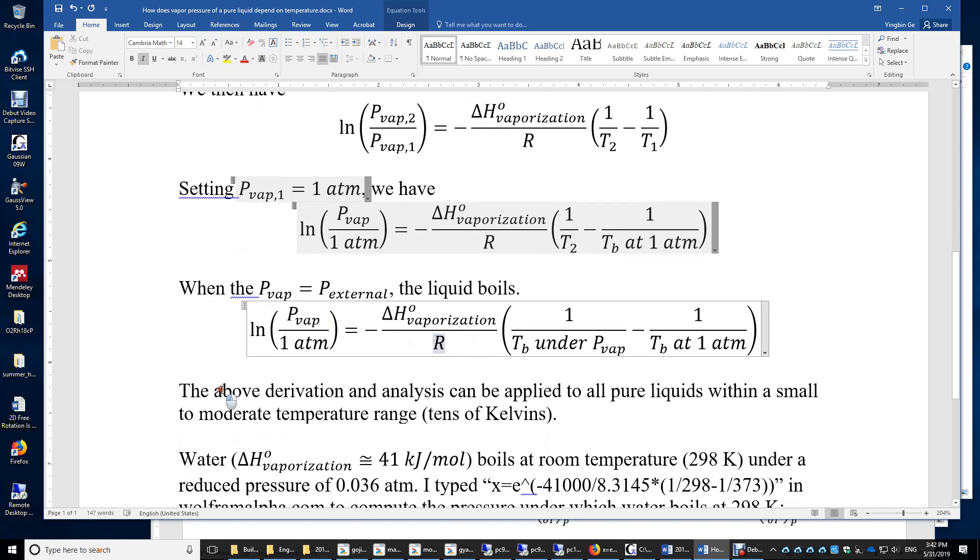Therefore, we can easily determine either the boiling point of a liquid from its external pressure, or vice versa, if we know the enthalpy of vaporization and the boiling point of that liquid.